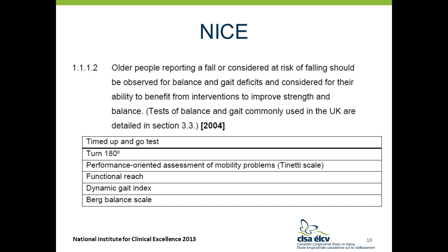The NICE guideline doesn't include as detailed an algorithm as the AGS-BGS, but recommends a balance and gait test for individuals who report a fall or are considered high risk. Tests commonly performed in the UK are recommended: the timed up-and-go, the 180-degree turn, the POMA, functional reach, dynamic gait index, and the Berg Balance Scale — so several tests overlap with the AGS-BGS recommendations.